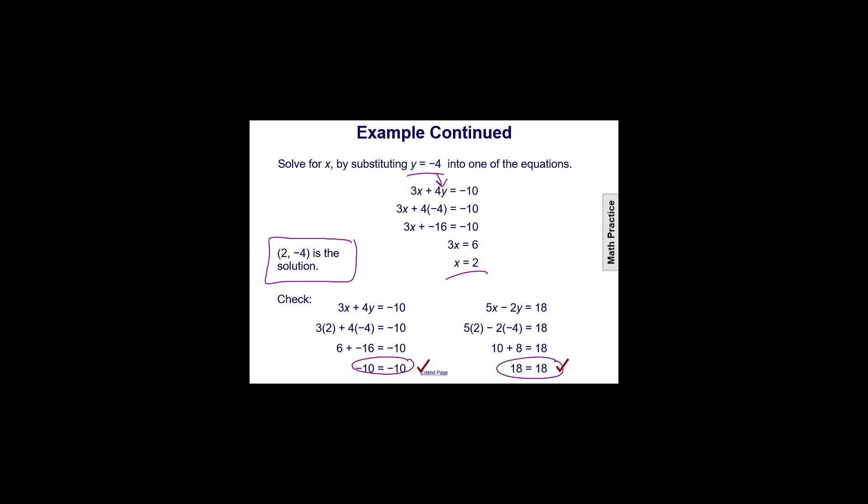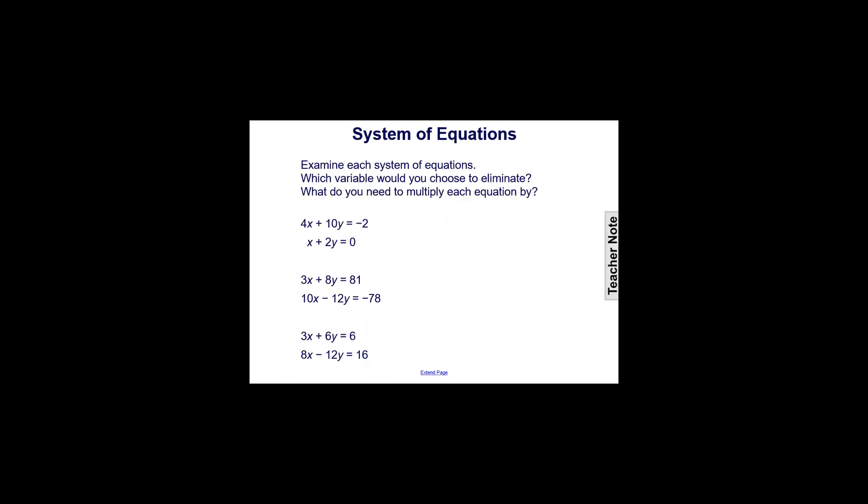We get the same solution whether we eliminate the x variable or the y variable. No matter what order, no matter how many steps you take, you still get the same solution. Eliminating x required multiplying both equations and subtracting, whereas eliminating y only required multiplying one equation and adding. So it's really about what's going to be quickest and easiest for you as the solver. Let's put that reasoning to the test.